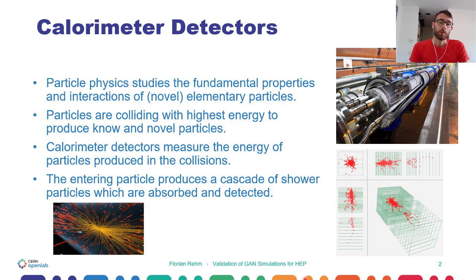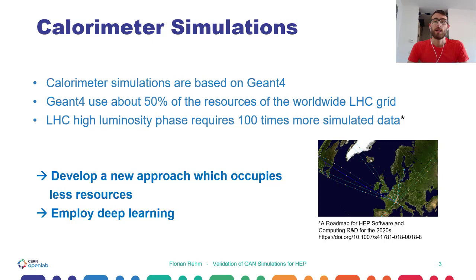Calorimeter Monte Carlo simulations are based on Geant4, which are very computing resource intensive. They use about 50% of the computational resources of the huge worldwide LHC grid. And in the future LHC high luminosity phase, around 100 times more simulated data is needed. Even with taking technology improvement into account, this exceeds the computational resources by a lot. That is why we are seeking and developing faster approaches to replace the recent Monte Carlo simulations.